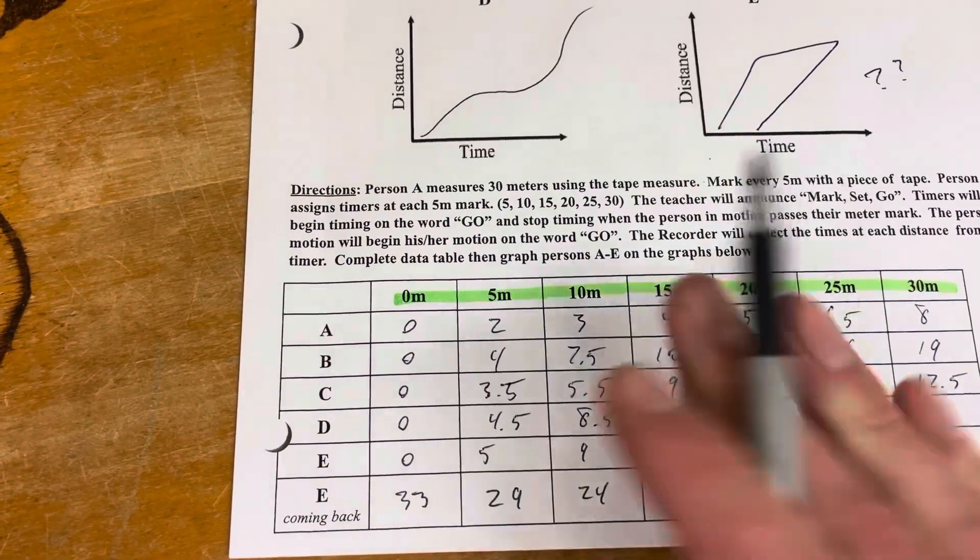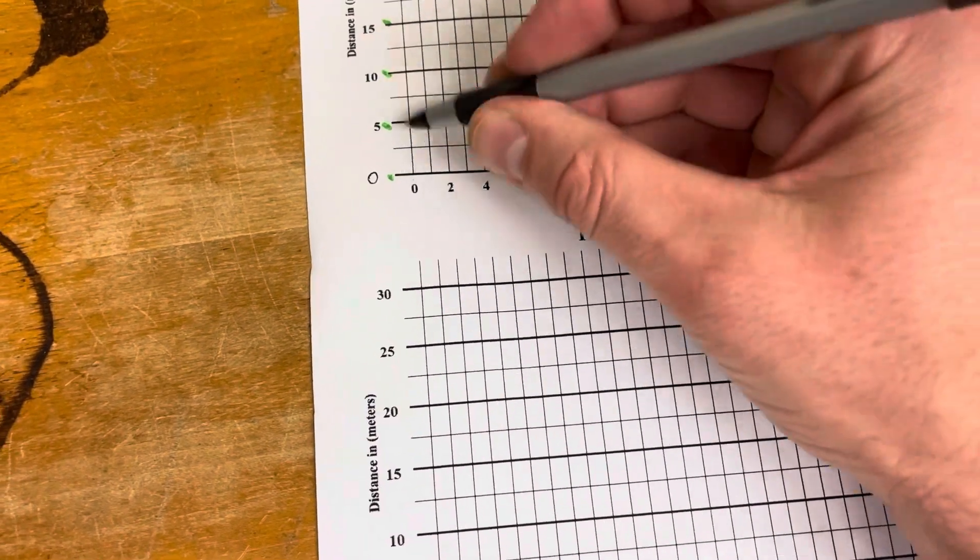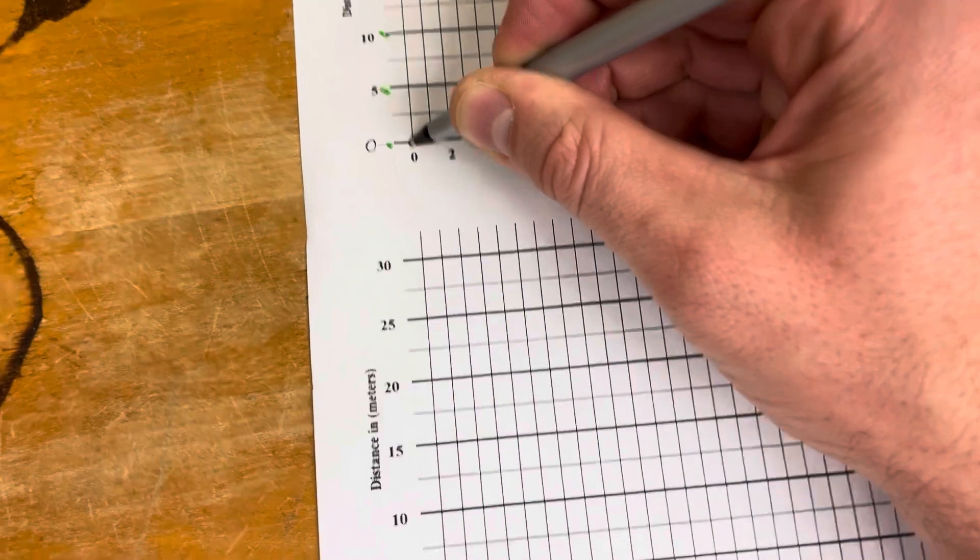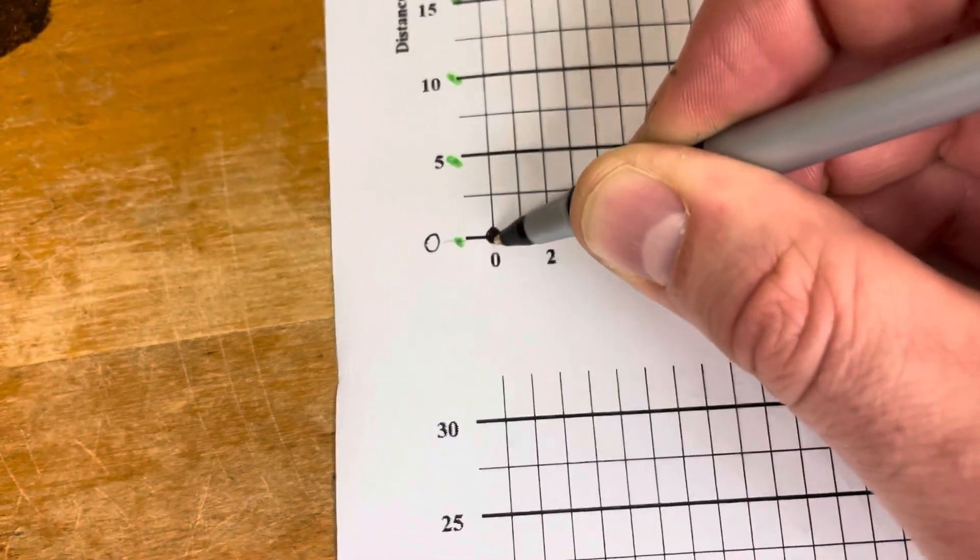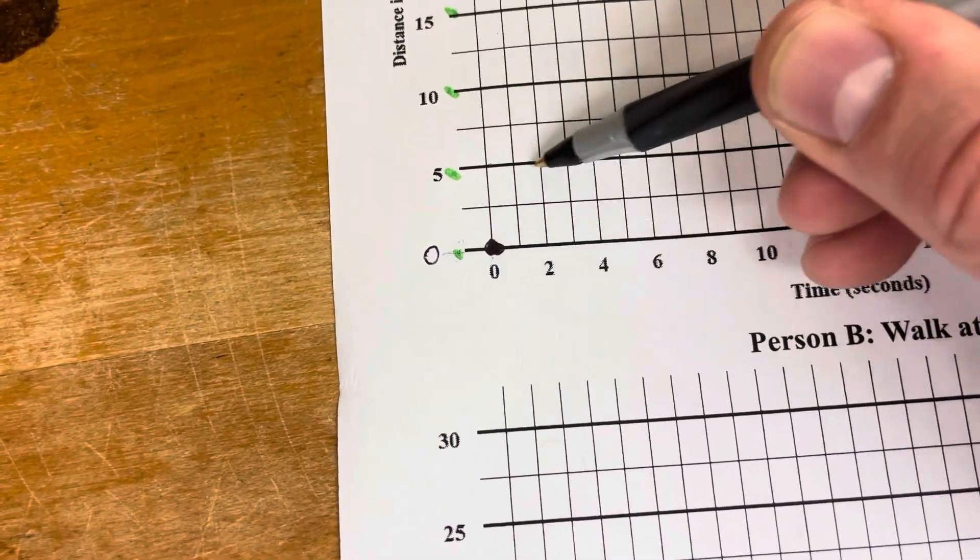Our first point we're going to plot is 0, 0 because that's the starting point. You look over at 0 and 0 and put a dot. Make it a nice big dot so it's easy to find. You can use a marker or a pencil to start off in case you make any mistakes.